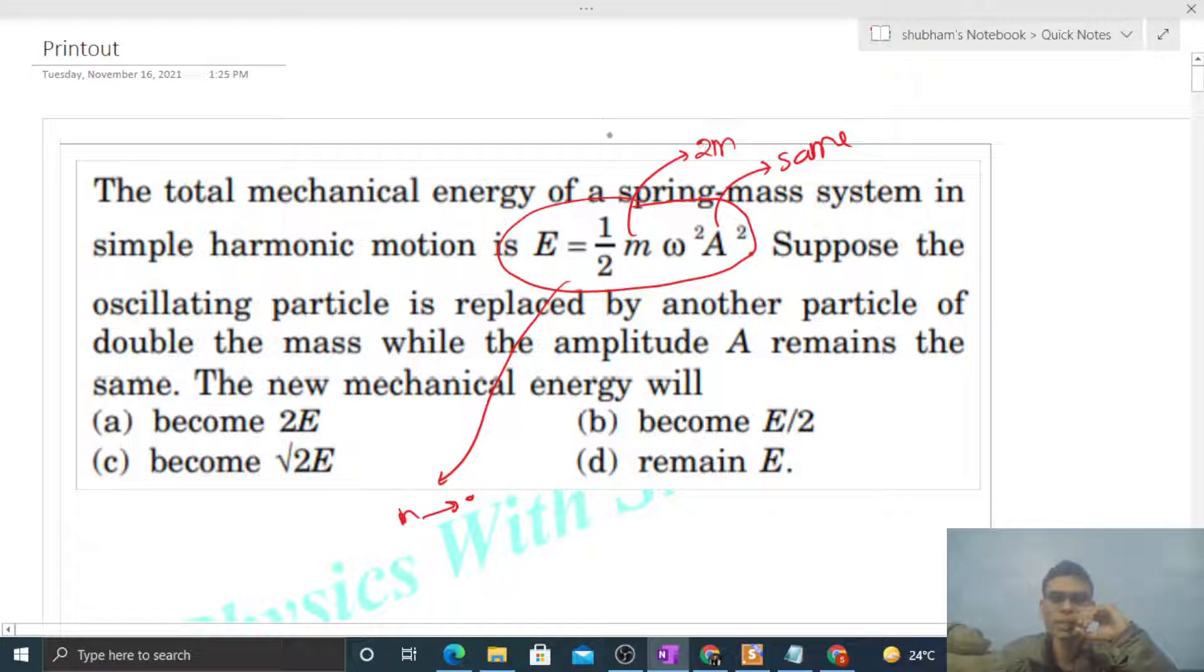For a spring-block system, omega is √(k/m). Now, the spring is the same, meaning k is the same, but if we double the mass then omega will also change.